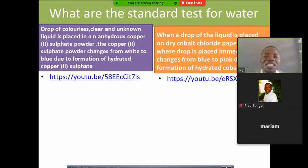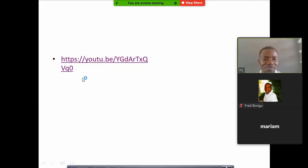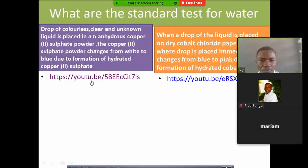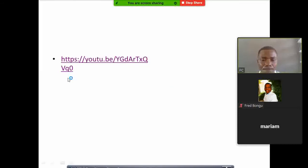We have two standard tests for water. One is, you take that drop of colorless, clear and unknown liquid. We don't know it. We call it a non-liquid. We place it in anhydrous copper sulfate powder. Now, what do we expect when we do this experiment? So, the result of this experiment will determine whether what we are having is water or not. Let me show you the experiment of when we use anhydrous copper sulfate to test for water. When we talk of anhydrous, it means it doesn't have water. When we say hydrated, it means it has water.